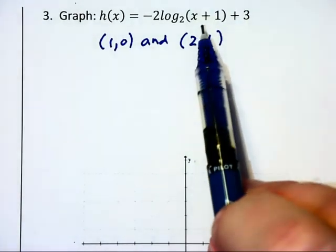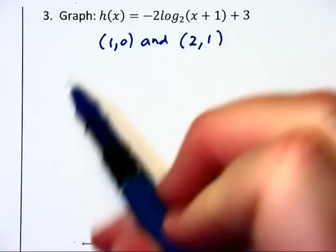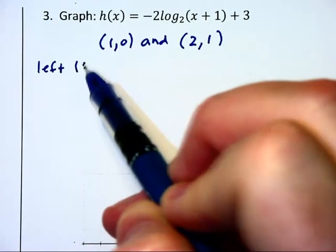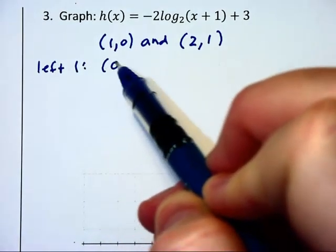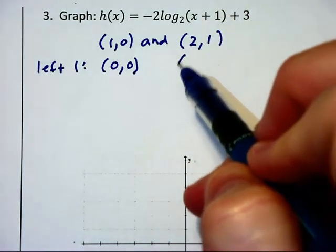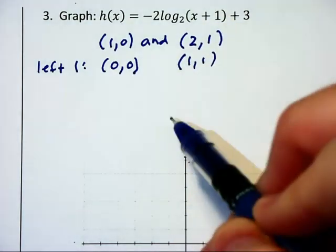Next we're going to look at the x plus 1 there, and that tells us this graph is going to shift left one unit. That takes (1,0) back to the origin and takes (2,1) left to (1,1).